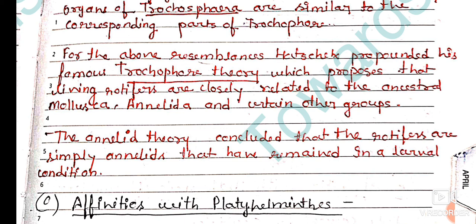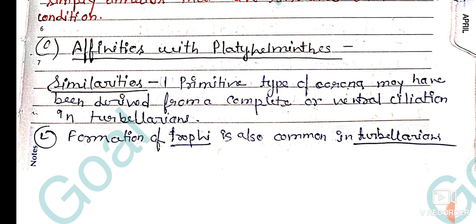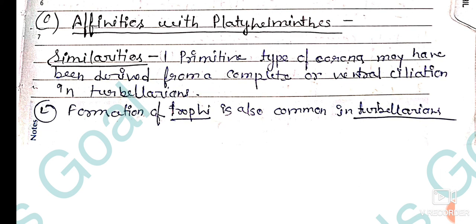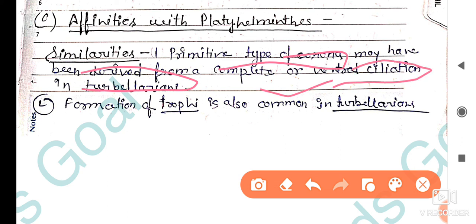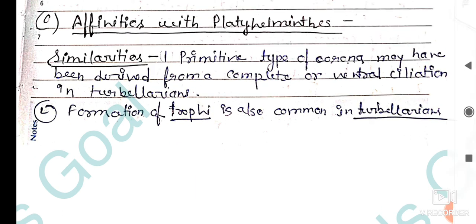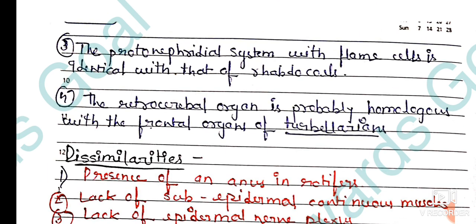Next are the affinities with Platyhelminthes. The primitive type of corona may have been derived from the complete ventralization of turbellarians, which are a group of Platyhelminthes. The formation of trophi, or jaws, is also common in turbellarians. The protonephridia system with flame cells is also identical with the rhabdocoels, which are common flatworms of Platyhelminthes.